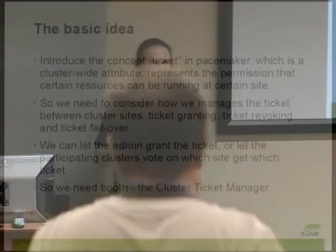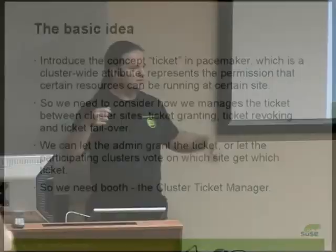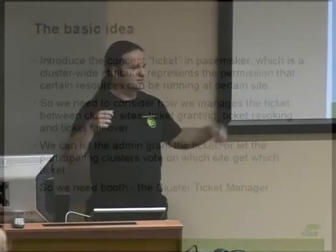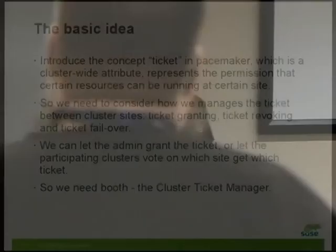In principle, this means you could set up a couple of independent clusters and manually grant and revoke tickets on those sites if you wanted to do this purely manually. That's fine, but it doesn't help if you want to automate failover, and there's nothing in the underlying ticket system preventing the administrator from accidentally assigning the same ticket to two sites — and then everything's running all over the place, and nobody really wants that. So we need a means of automating this and keeping track of tickets.